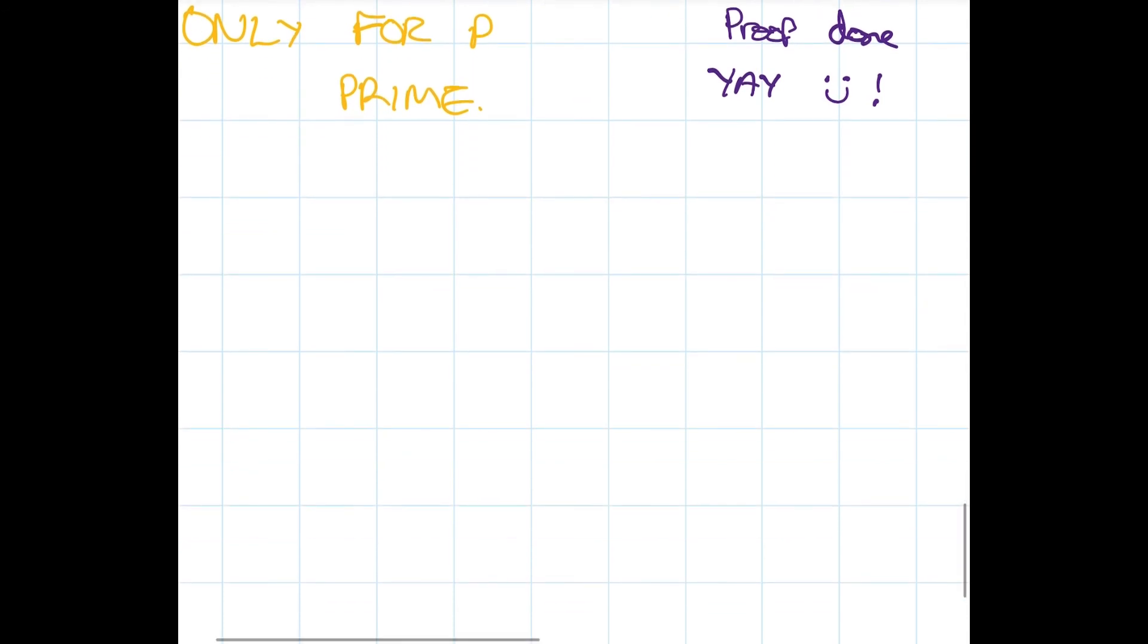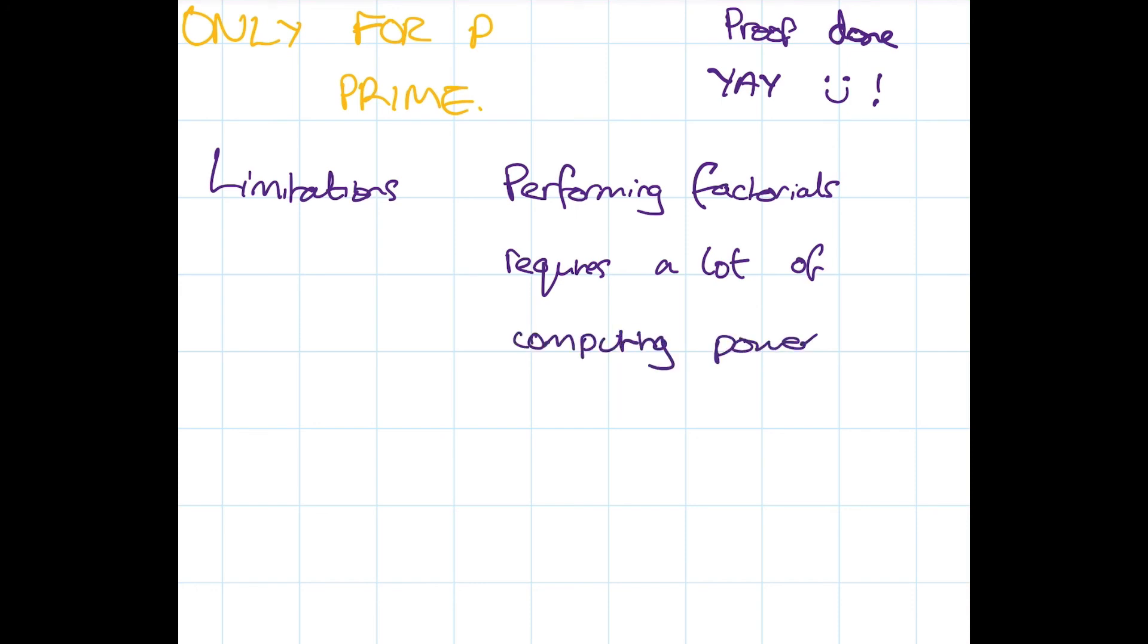Finally, let me talk about the limitations. Performing factorials requires a lot of computing power. If you go into your calculator now and try to calculate above say 100 factorial, your calculator simply won't do it. So the limitation of Wilson's theorem is for large p it's not really feasible to use. However, it's still a beautiful theorem, a really great result, and the proof is really slick. I really hope you've enjoyed this video guys, something a little bit different.